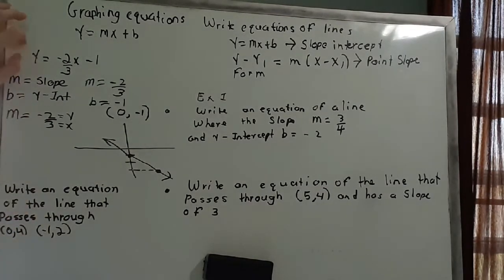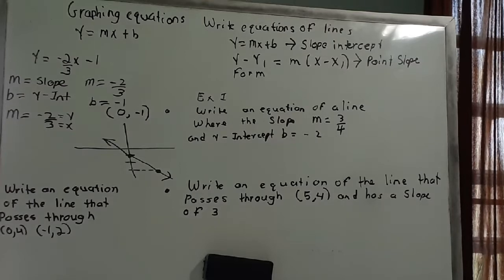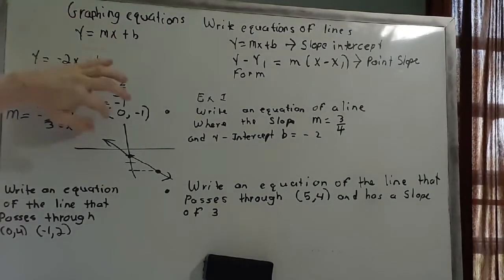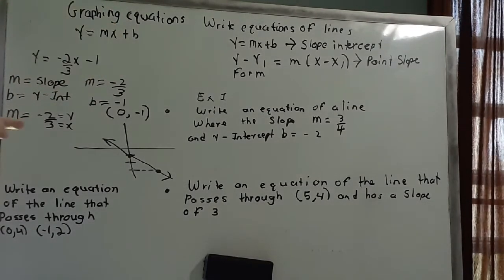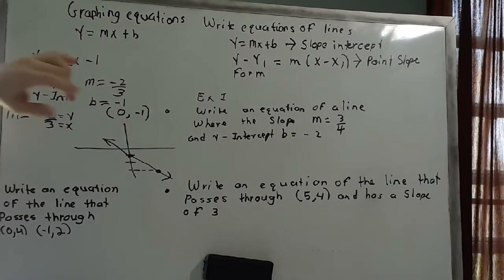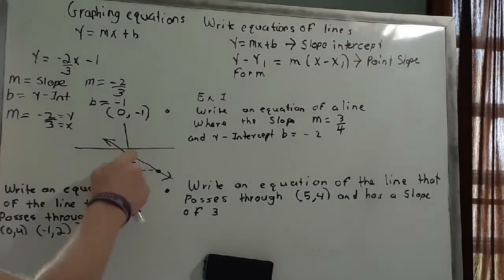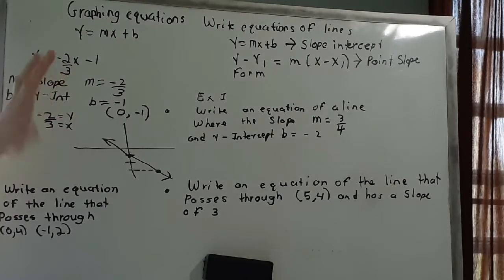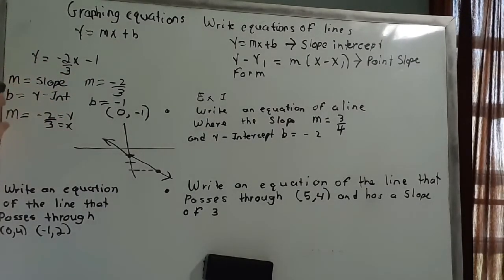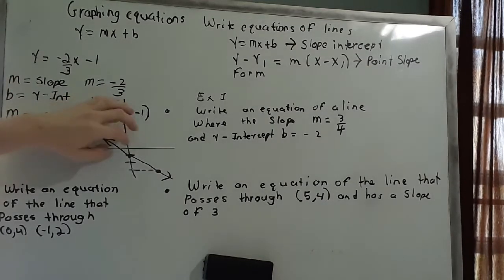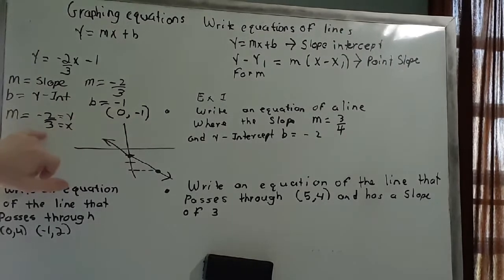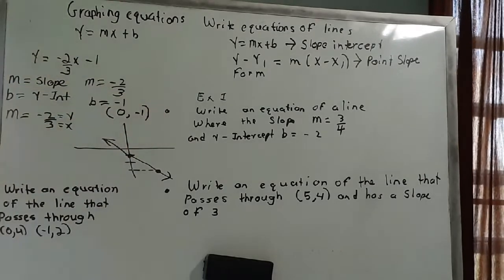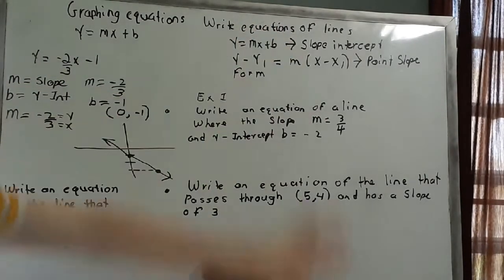Let me recap: I have this equation. First, make sure it's solved for y — it is. Secondly, identify the slope, which is negative two-thirds, and the y-intercept, which is negative 1. Because x equals zero at the y-intercept, I graph the first ordered pair as (0, -1). Because my slope is negative two-thirds, I move two spaces down and three spaces to the right. I plot the points, connect the line, and that's it. I'll do one more example before moving on.